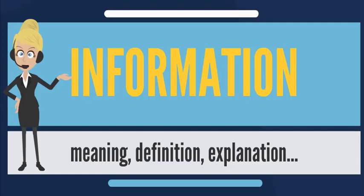The bit is a typical unit of information, but other units such as the NAT may be used. For example, information in one fair coin flip is log₂(2/1) = 1 bit, and in two fair coin flips is log₂(4/1) = 2 bits. The concept that information is the message has different meanings in different contexts.